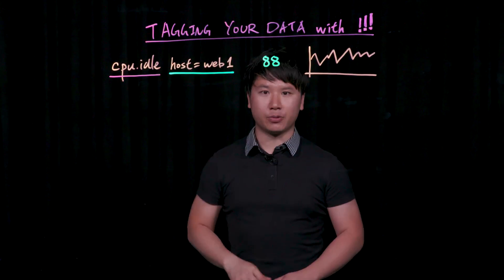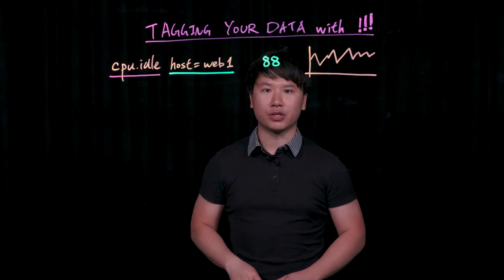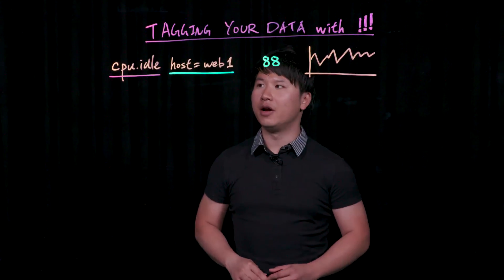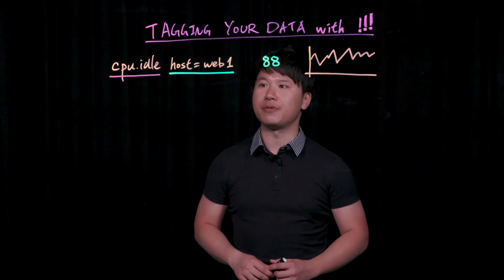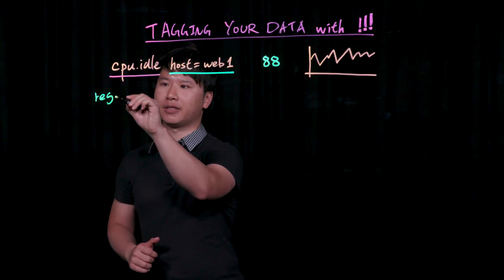But you might have noticed when you use our AWS integration, for example, that the data comes in with additional dimensions that we collect on your behalf. For example, if you're pooling EC2 CPU information, it would likely have the region that the data is coming in.